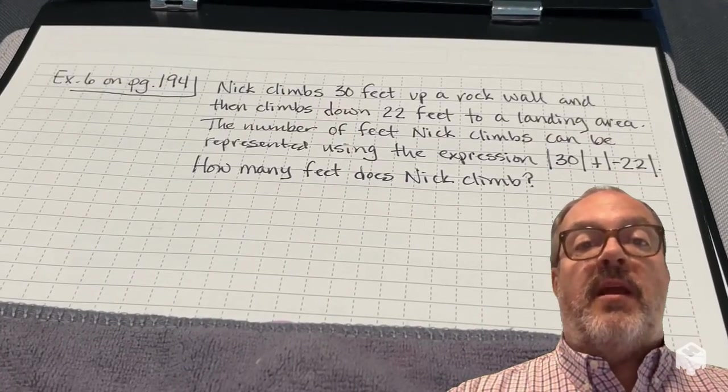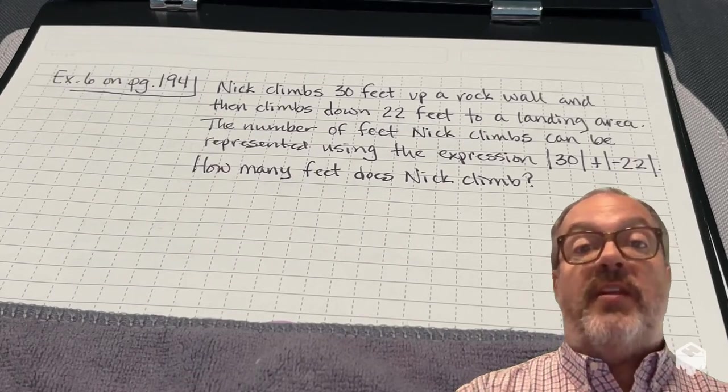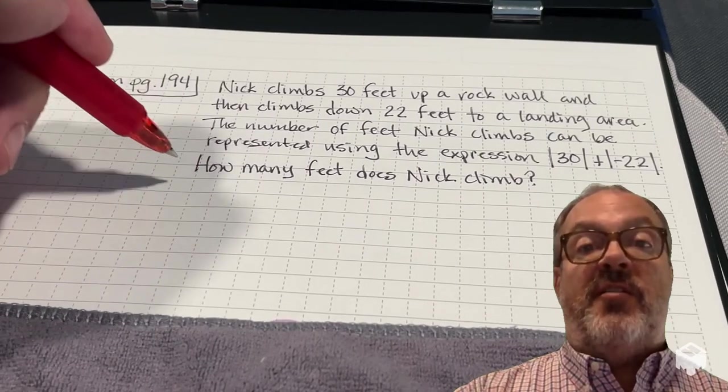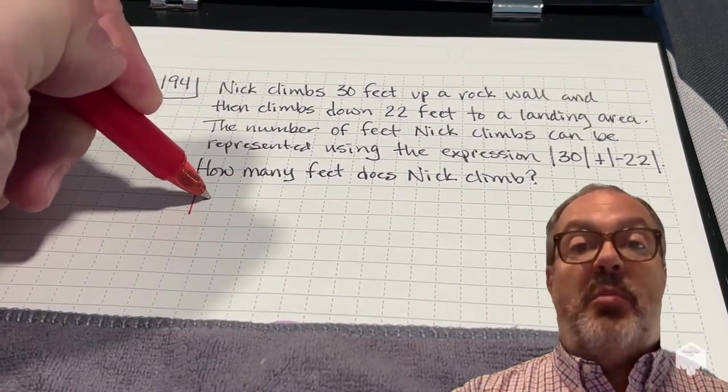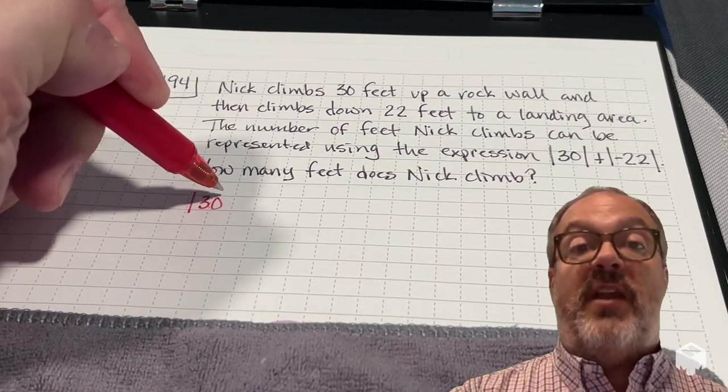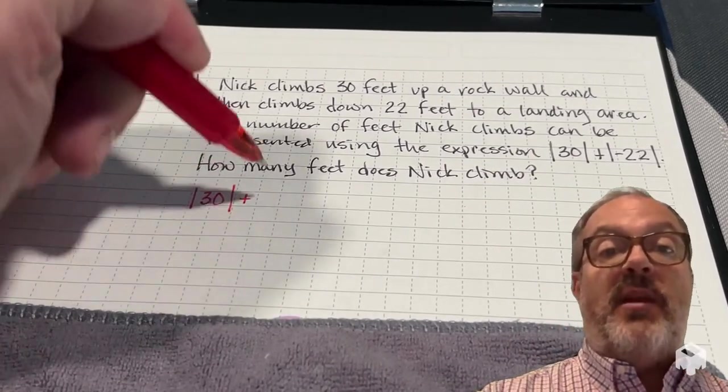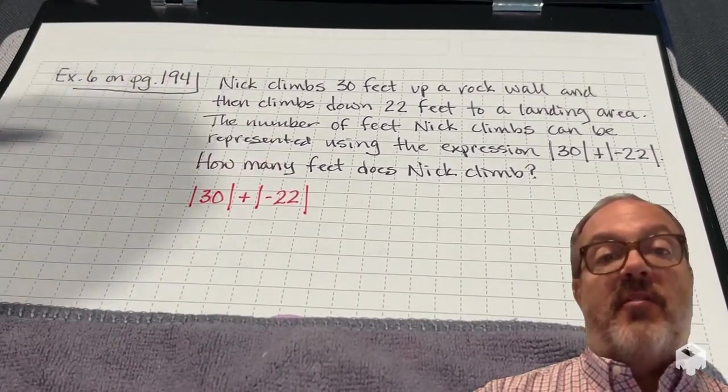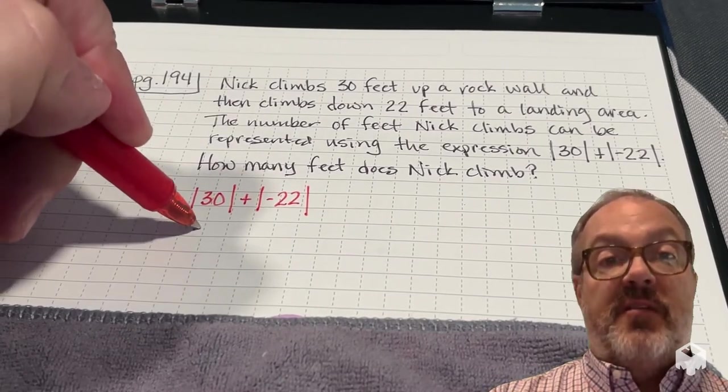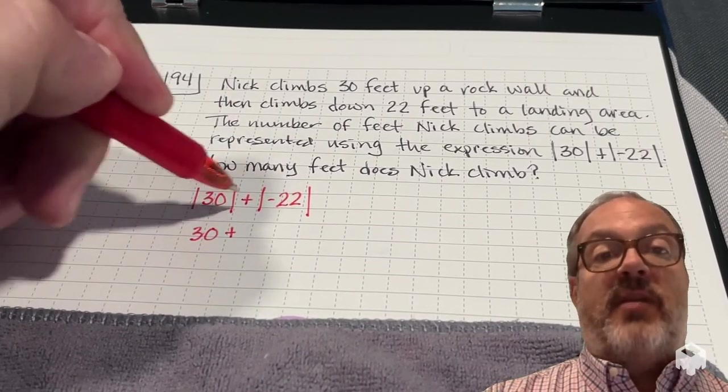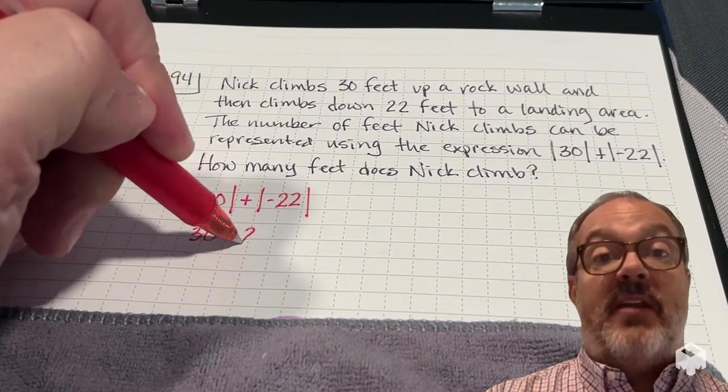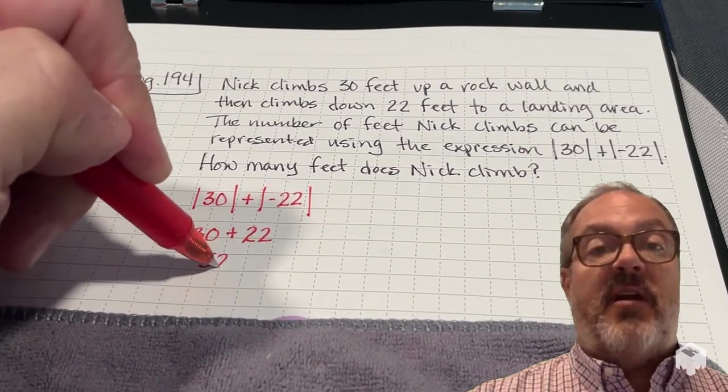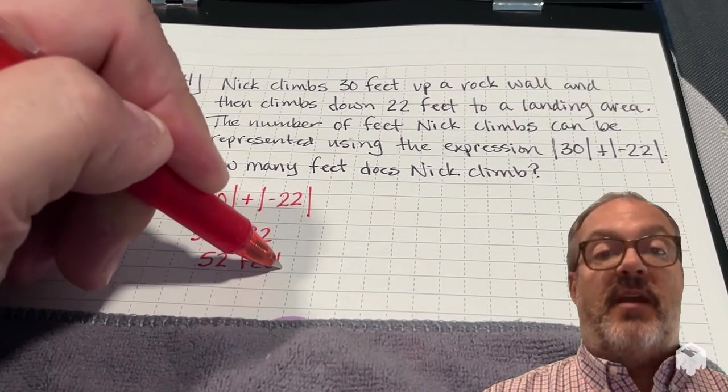All right, in this problem, Nick climbs 30 feet up a rock wall and then climbs down 22 feet to a landing area. The number of feet that Nick climbs can be represented using the expression the absolute value of 30 plus the absolute value of negative 22. What we want to find out is how many feet does Nick climb. So if I just rewrite that expression, absolute value of 30 is 30, and then I'm going to add to it the absolute value of negative 22, which is positive 22. And then if I add those together, I get 52 feet that Nick climbed.